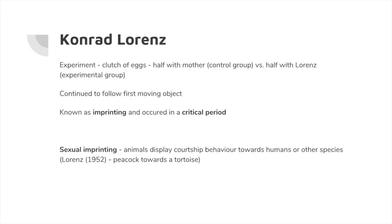Unsurprisingly, these goslings followed the first moving thing that they saw. This is an inbuilt evolutionary mechanism in birds, known as imprinting. It gives us some insight into how children grow up. Bowlby later used this, saying: if geese imprint, could humans have the same thing? The big thing he borrowed was the critical period — imprinting had to happen at a certain time within the first few days of being born. He asked: do we have to form an attachment within a certain time period?